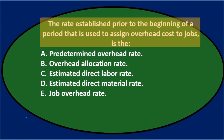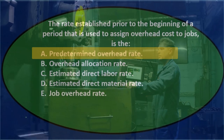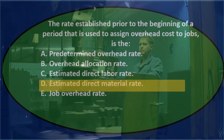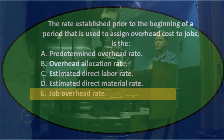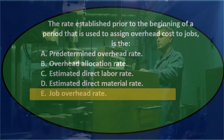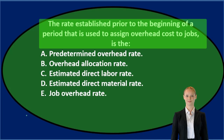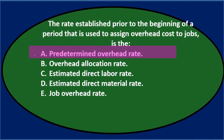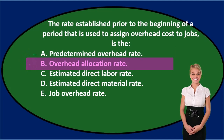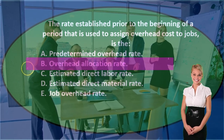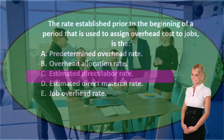Next question: the rate established prior to the beginning of a period that is used to assign overhead costs to jobs is the: A) predetermined overhead rate, B) overhead allocation rate, C) estimated direct labor rate, D) estimated direct material rate, or E) job overhead rate. A) predetermined overhead rate — that sounds familiar, I'll keep it. B) overhead allocation rate — sounds less familiar but kind of appropriate since we are allocating overhead to jobs, so I'll keep that for now.